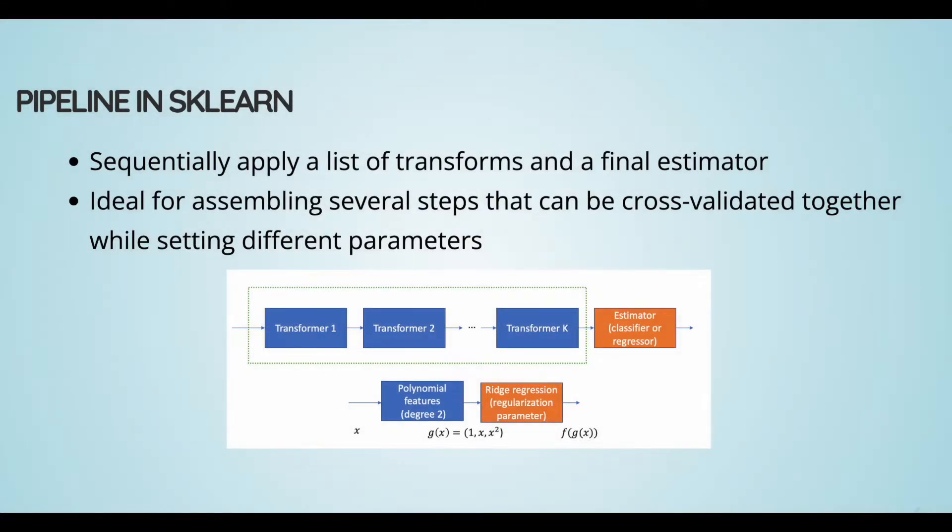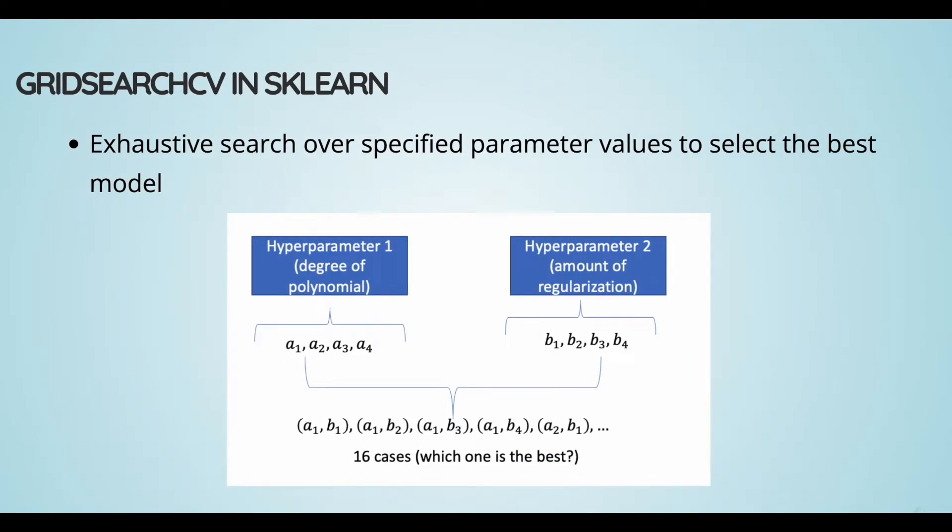So now let's move on to the second topic here, which is grid search CV in sklearn. So what's the purpose of grid search CV? We can use it to perform exhaustive search or comprehensive search over a specified parameter values to find the best set of parameters. So let's say here we have two hyperparameters in the example that we saw. One is the degree of polynomial. And then the other one is amount of regularization, which I will show you in the next slide when we get to the code example.